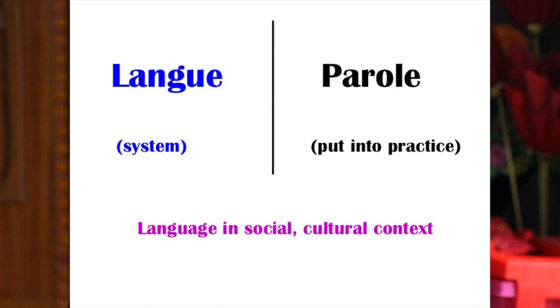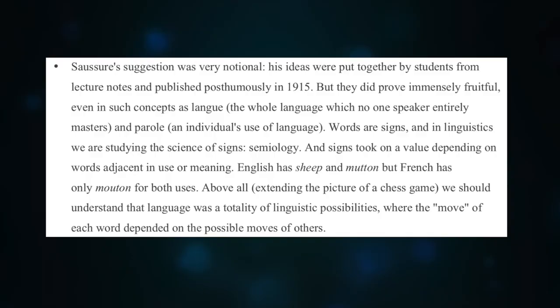Saussure's suggestion was very foundational because he talked about the langue and parole. Langue is the wholeness or entirety of the lexicon that one has in his mind, and the parole is the amount of spoken words that are uttered by the speaker. According to Saussure, he viewed language as science, and that evolved into the study of semiology. He considered that all the components of language, like the chess play, are moved and affected by the adjacent move of the surrounding components. He thought that language is a matter of studying possibilities that surround it.